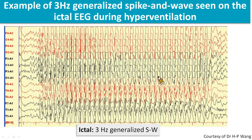Next we'll talk about the ictal pattern. EEG abnormality and absence seizures are provoked by hyperventilation. This patient was doing hyperventilation; absence seizures occurred and the EEG showed concomitant generalized 3 Hz spike and wave. Keep in mind that if hyperventilation is poorly performed, ictal attack or generalized spike and wave may not be triggered.